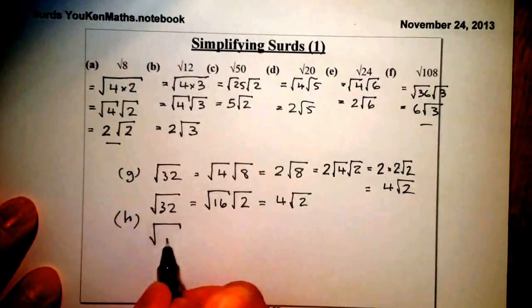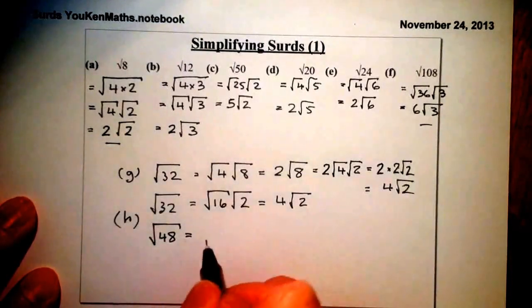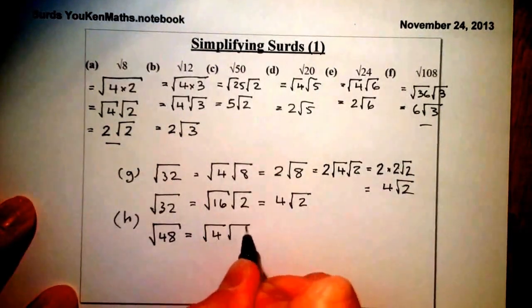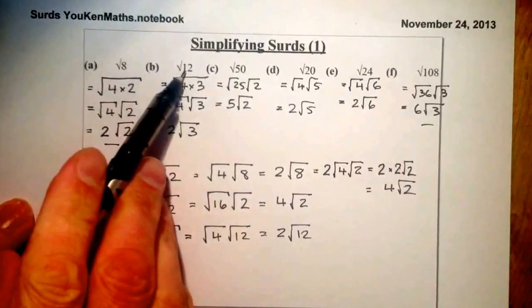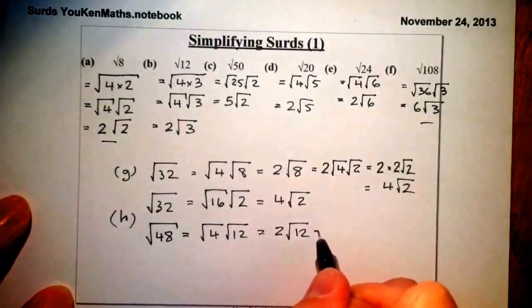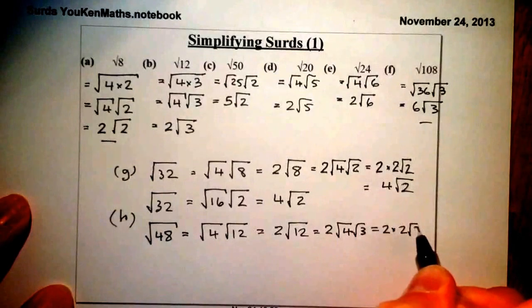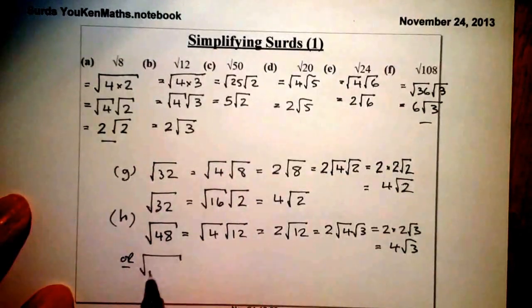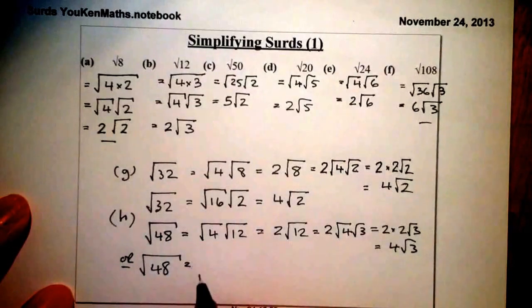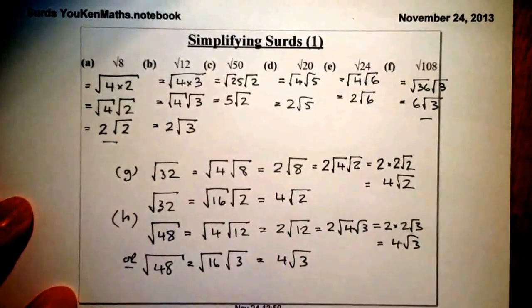I'll give you another example to try — freeze the video and try it, then I'll go through the work. Root 48: using root 4 and root 12 gives 2 root 12, but root 12 simplifies further. So that's 2 times root 4 times root 3, which equals 2 times 2 root 3, giving 4 root 3. Or more efficiently, go straight to root 16 times root 3, which gives 4 root 3.